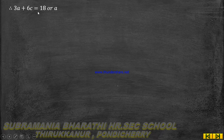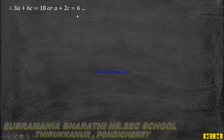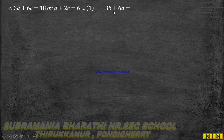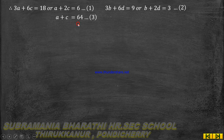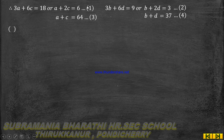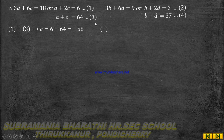From 3a plus 6c equal to 18, dividing by 3: a plus 2c equal to 6. That is equation number 1. Next element: 3b plus 6d equal to 9, dividing by 3: b plus 2d equal to 3. Equation number 2. Next: a plus c equal to 64, equation number 3. And b plus d equal to 37, equation number 4. Now solving equations 1 and 3.